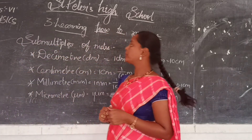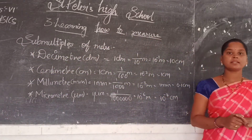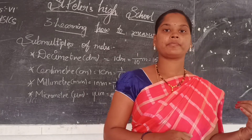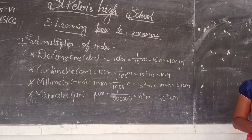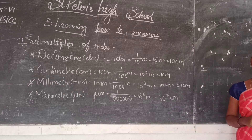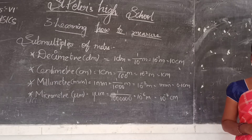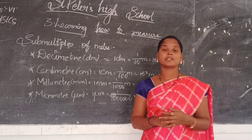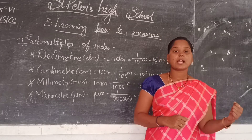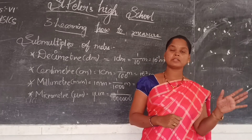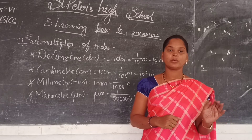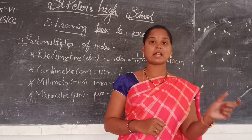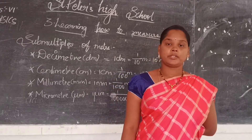Good morning children. Welcome to class 6 physics. In the last class we learnt the multiples of meter. As we are discussing the lesson 'how to measure,' we have learnt what are the physical quantities, the derivative quantities, what are standard units and what are the common standard units. Right now we are using only standard units, because they are safe for all courses and all places. Non-standard units are not equal for all places, so these non-standard units are called conventional units.